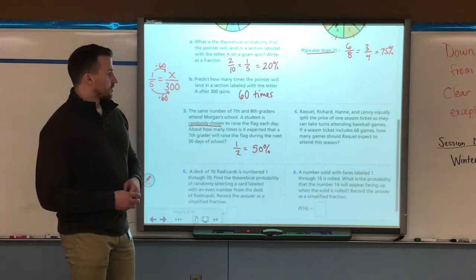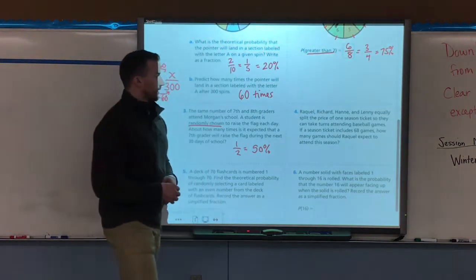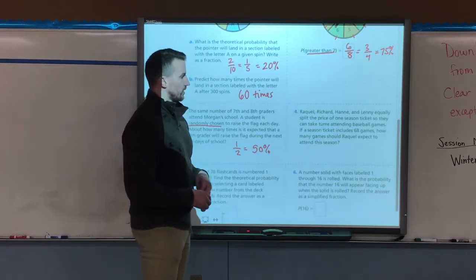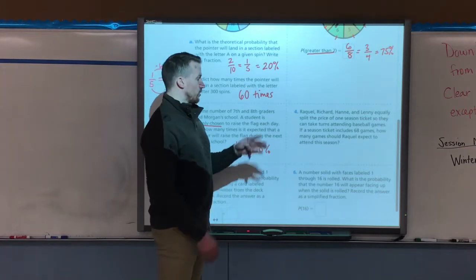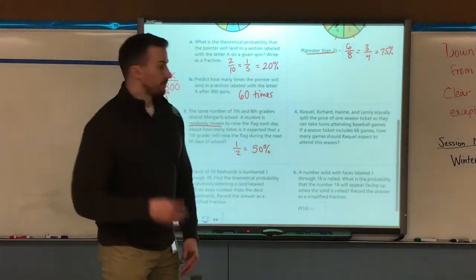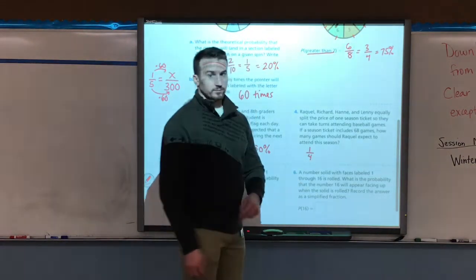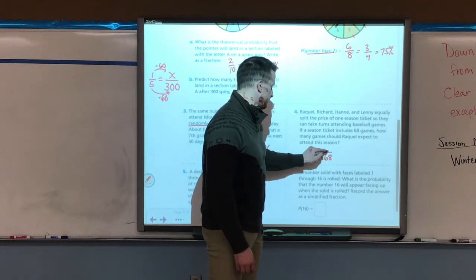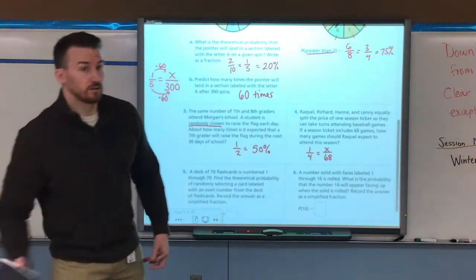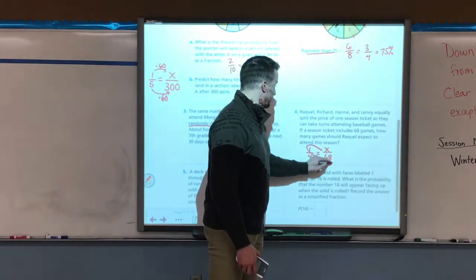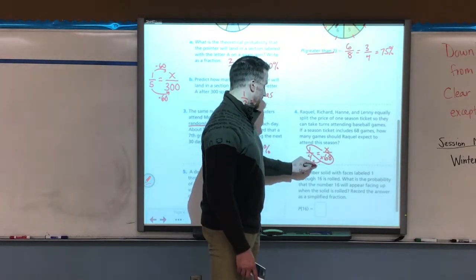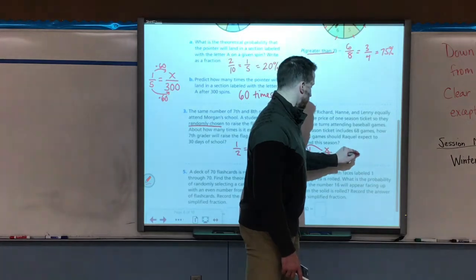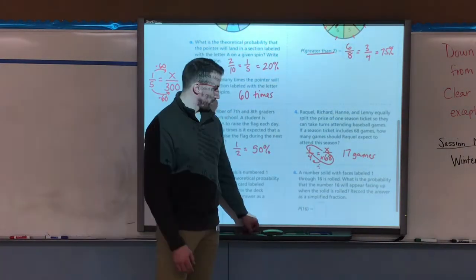Example four says Raquel, Richard, Hannah, and Lenny equally split the price of one season ticket so they can take turns attending baseball games. If a season ticket includes 68 games, how many games should Raquel expect to attend this season? So there's four of them. So one out of every four times Raquel gets to go because Raquel is one out of the four friends, and if there's 68 games, 68 would go on the bottom. I can use that to solve this so I can cross multiply here. 68 times one, and then I can divide it by four to find my answer. So if I take 68 and divide it by four, I get 17. So Raquel can expect to go to 17 games.